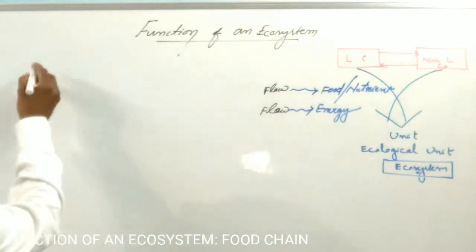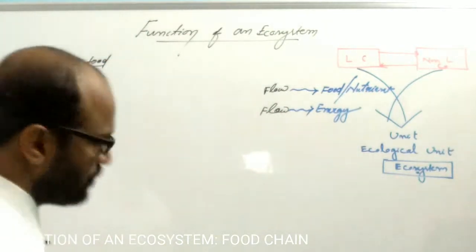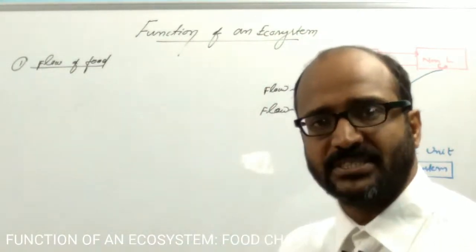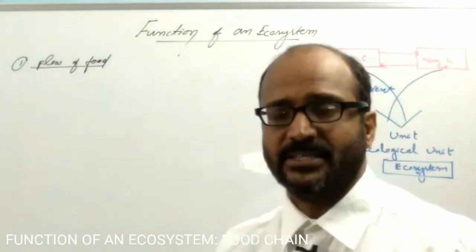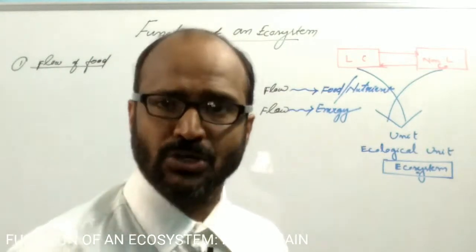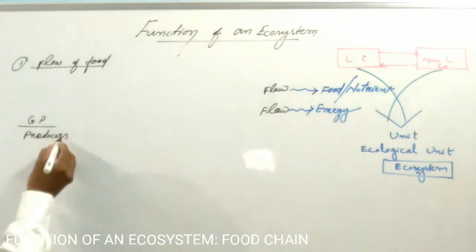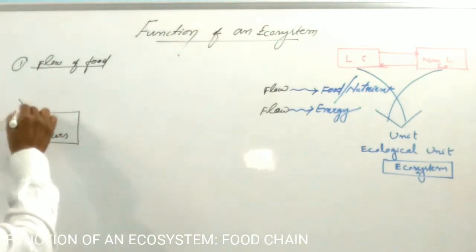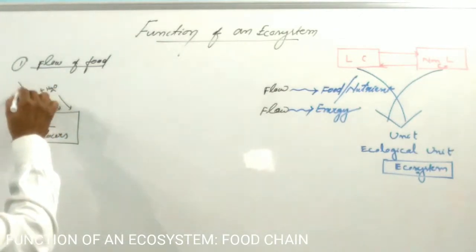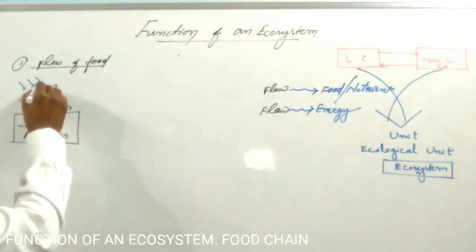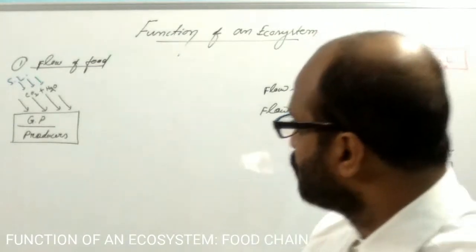First, come to the flow of food. In the ecosystem, the first member is the producers — the green plants. They have the capacity to prepare the carbohydrate food matter for all members of the ecosystem. They produce food from raw materials like carbon dioxide and water in the presence of chlorophyll and sunlight, and store it inside.